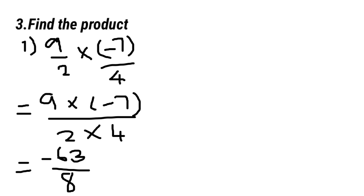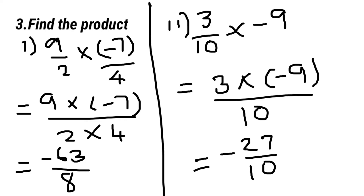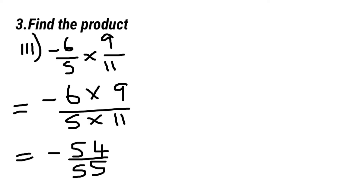Find the product. 9 by 2 multiply minus 7 by 4. We multiply product of numerator by product of denominator and we get minus 63 by 8. Second sum: 3 by 10 multiply minus 9, answer is minus 27 by 10.